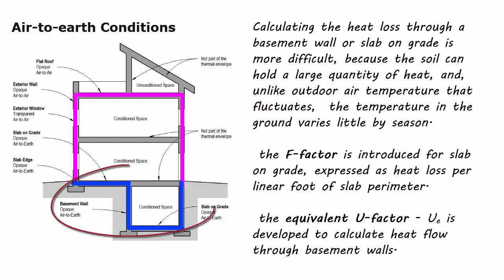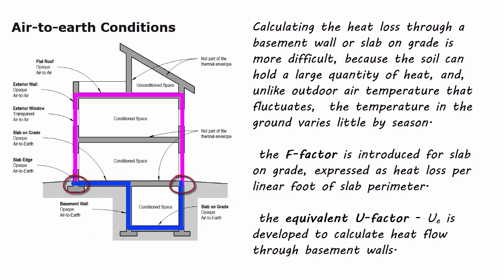Calculating the heat loss through a below-grade wall or slab on grade is more difficult because the soil can hold a large quantity of heat, and unlike outdoor temperature that fluctuates, the temperature in the ground varies little by season. So the F-factor is introduced for slab on grade, expressed as heat loss per linear foot of slab perimeter. The equivalent U-factor, UE, is developed to calculate heat flow through basement walls.